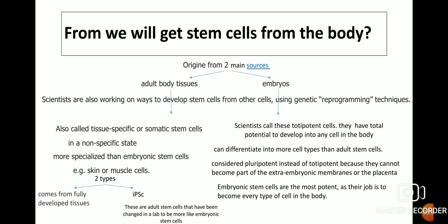The second source is embryos. Scientists call these totipotent cells — they have total potential to develop into any cell in the body and can differentiate into more cell types than adult stem cells. However, they are considered pluripotent rather than totipotent because they cannot become part of the extra-embryonic membranes or the placenta. Embryonic stem cells are more potent as their job is to become every type of cell in the body.